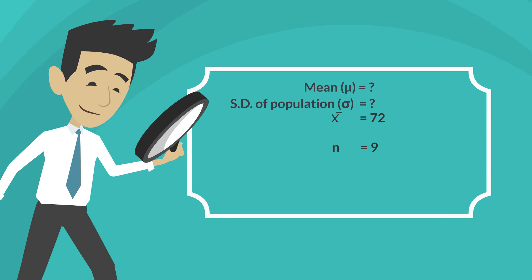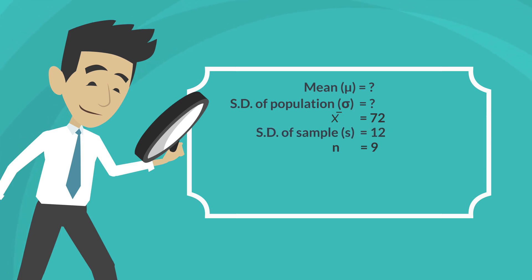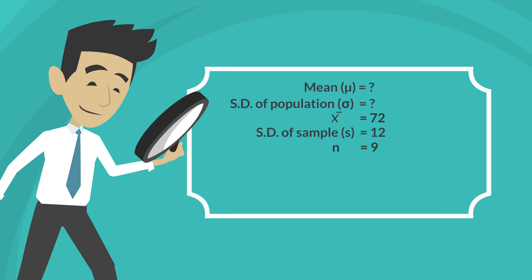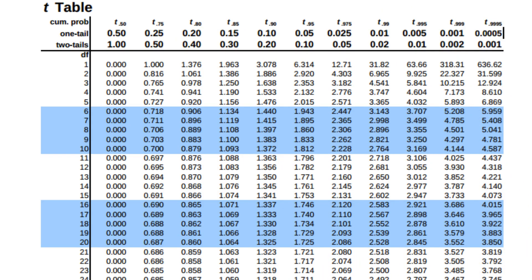Continuing with our example of a sample of 9 scores for exam 1 with a mean of 72, let's now assume that the sample standard deviation is 12. Note that this is different from the population standard deviation. Looking at the t-table with n minus 1, or 8, degrees of freedom for a 95% confidence interval (2.5% in each tail), the t-value is 2.306.